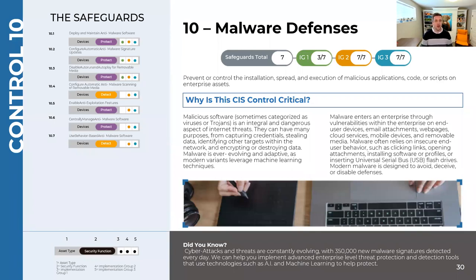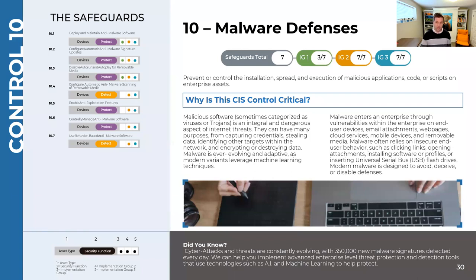10.2 is configure automatic anti-malware signature updates — we need to use an anti-malware application that is manageable for updates. Many organizations start out getting what's free or cheap or easy, and you don't get the centralized management to control that. 10.3 is disable auto-run and auto-play for removable media. This isn't as big a concern as it used to be when we moved things around by DVDs, CDs, and USB sticks frequently, but it's still relevant. When you plug a USB stick in, you don't want it to automatically play whatever is on it — if it's malicious and it executes, it can cause problems.